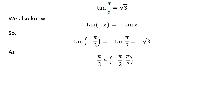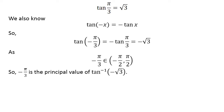Since minus pi upon 3 lies in the open interval of minus half of pi and half of pi, minus pi upon 3 is the principal value of inverse of tangent of minus square root of 3.